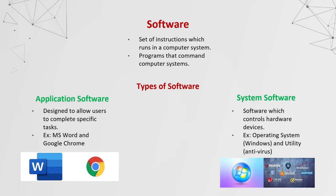Software is a set of instructions which runs in a computer system — programs that command computer systems. There are two types of software: application software and system software. Application software is designed to allow users to complete specific tasks. System software controls hardware devices, for example the operating system such as Windows, and utility software such as antivirus.